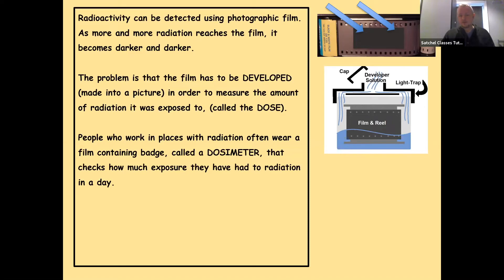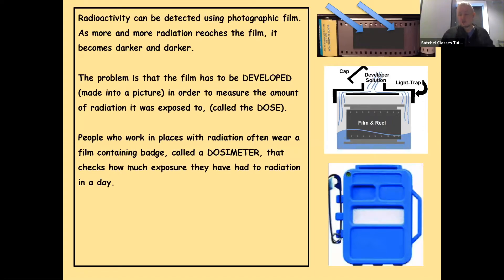So people who work in places with radiation often wear a film-containing badge called a dosimeter that checks how much exposure they've had to radiation in a day, so that they know if they're working within safe levels or not. And it looks like this.